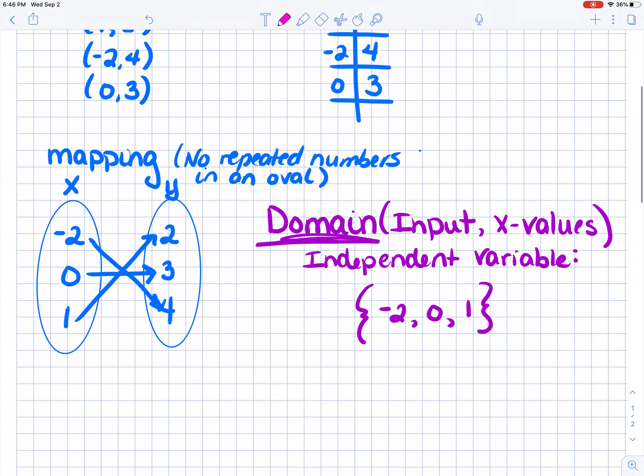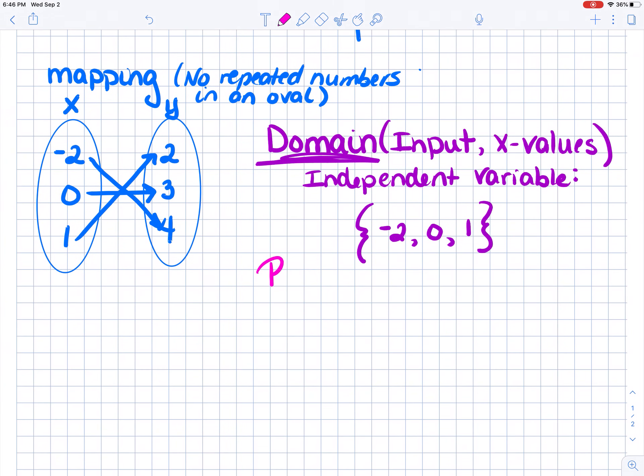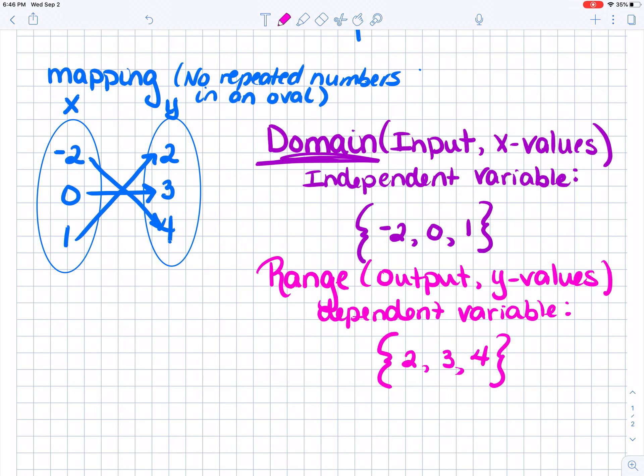Our range is the exact opposite. The range is going to be your output, your Y values. And it's also going to be called your dependent variable. And we're going to get into that more as we get into more real life examples. And again, we put that in brackets. We take the Y values and we go least to greatest, and we don't repeat values. So 2, 3, 4.